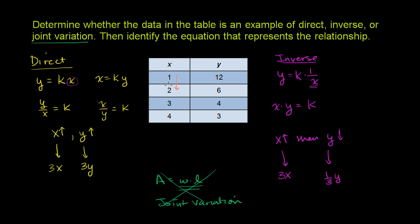So it's definitely not direct variation. As x increases, y is decreasing. So it's definitely not direct variation. And then, since we've ruled out the other two, you could probably guess this is going to be inverse variation, but we can validate it.